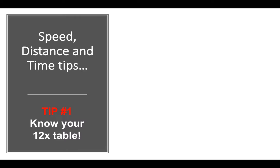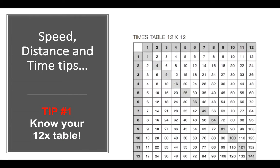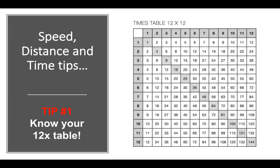So, speed, distance and time, a couple of tips. Now, I don't want to insult anybody's intelligence here, but it's really important that you know your 12 times table off by heart. So if I say to you, what's 7×12, you should be able to say quickly 84, what's 5×12, 60, etc. You should know this off by heart.